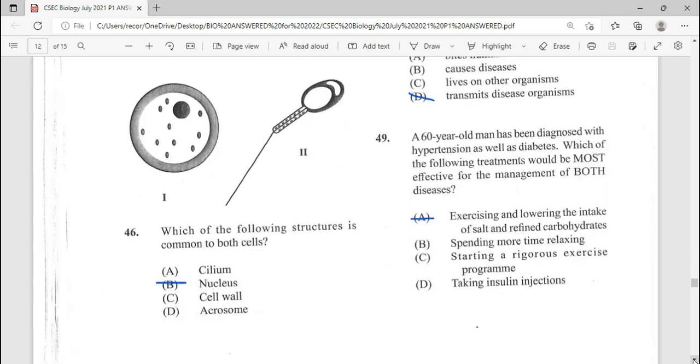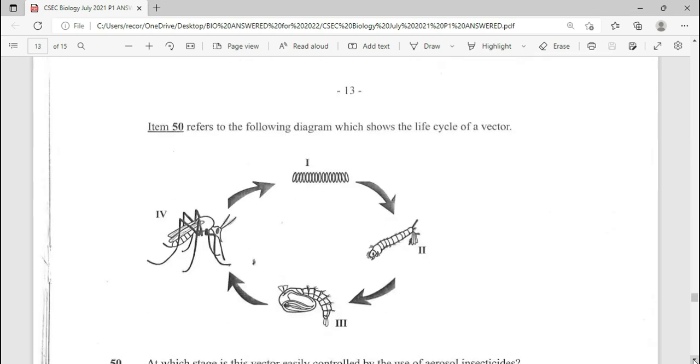48, a vector is defined as an organism that transmits disease organism. This is textbook. Item 49 is a repeated question. A 60-year-old man has been diagnosed with hypertension as well as diabetes. Which of the following treatment would be most effective for the management of both? The answer is going to be here, exercise and lower the intake of salt and refined carbohydrates.